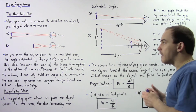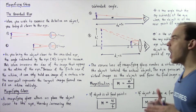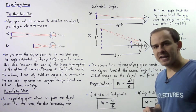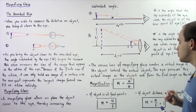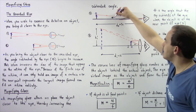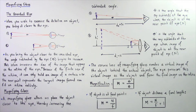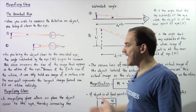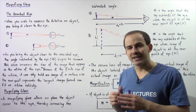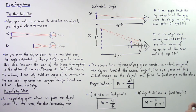Different magnifying glasses exist with different magnifications. The magnification given by capital M is equal to angle theta prime divided by theta, where theta prime is the larger angle with the magnifier and theta is the angle without it. We can also derive an equation for the magnification M in terms of the near point distance N and the focal length f of the convex lens.